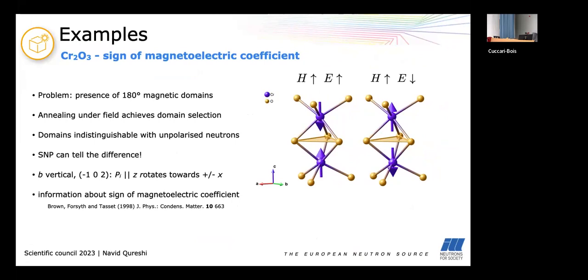So SNP was used on chromium oxide in order to extract the sign of the magnetoelectric coefficient. In order to do that you need to know the absolute configuration of your spins in the sample. The problem is the presence of 180 degree magnetic domains which you have in different regions of your crystal. So here we have a structural unit where the spins are spin-up spin-down along the threefold axis and at the same time you have regions in your crystal where you have spin-down spin-up. Now luckily you can select one of those domains by annealing with either parallel or antiparallel magnetic and electric fields. But you cannot distinguish them with unpolarized neutrons because the difference is the sign in the magnetic structure factor and since we measure the square we cannot distinguish them.